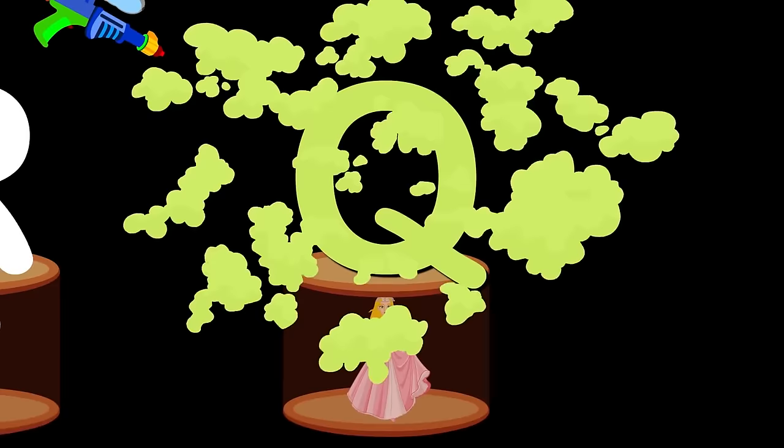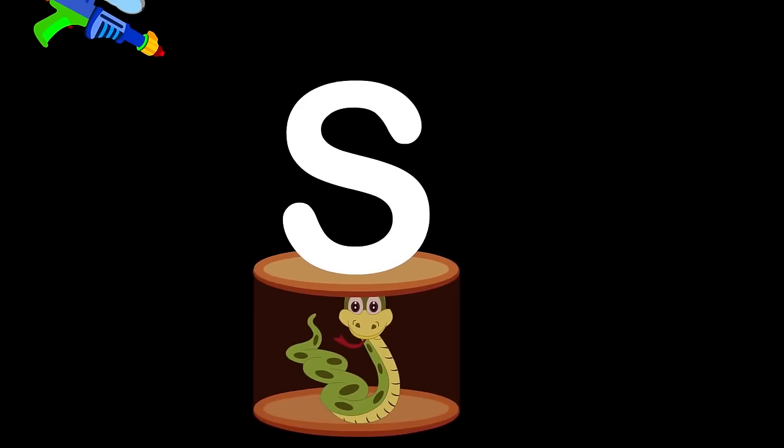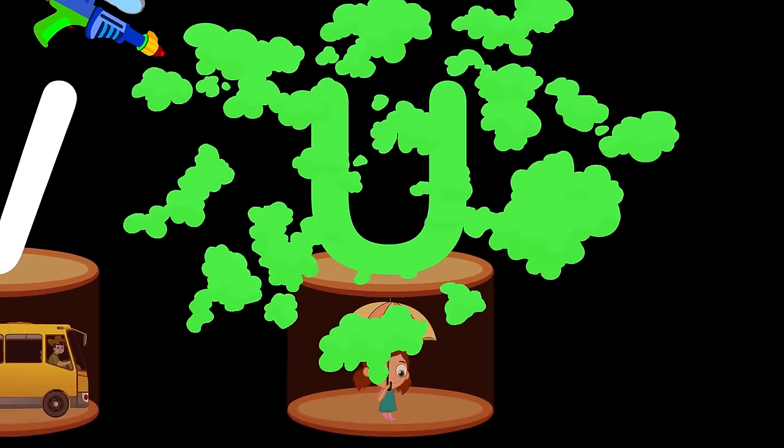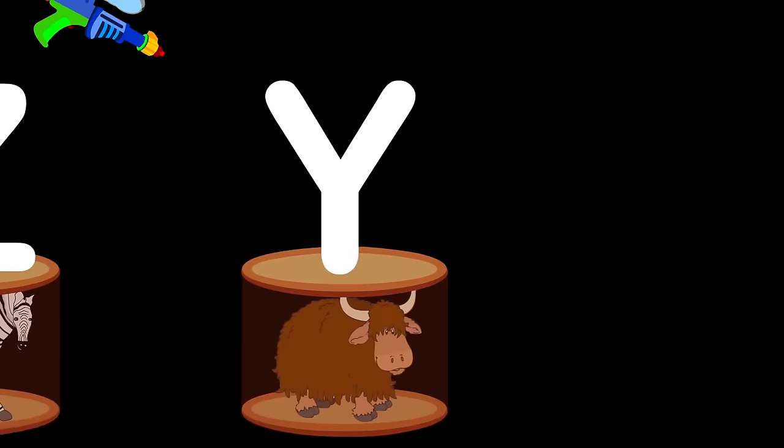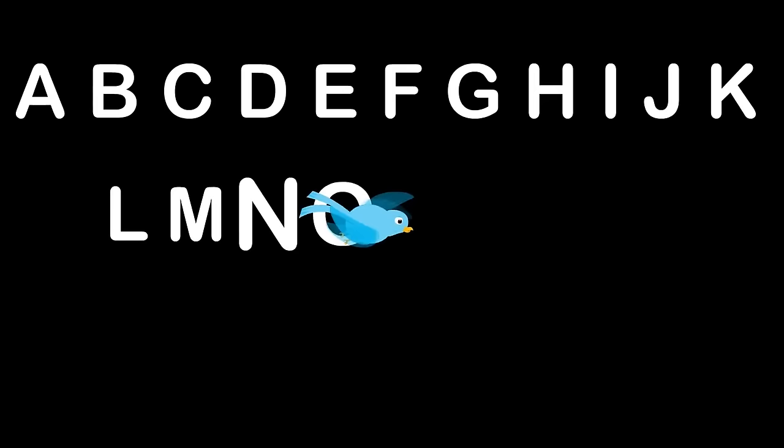Q for queen, R for rat, r-r-rat. S for snake, s-s-snake. T for tree, t-t-t-tree. U for umbrella, u-u-umbrella. V for violin, W for watch, w-w-watch. X for xylophone, Y for yellow, Z for zebra, z-z-zebra.